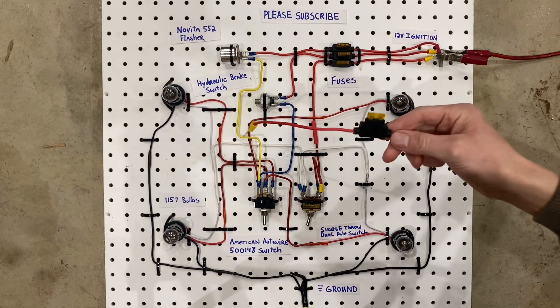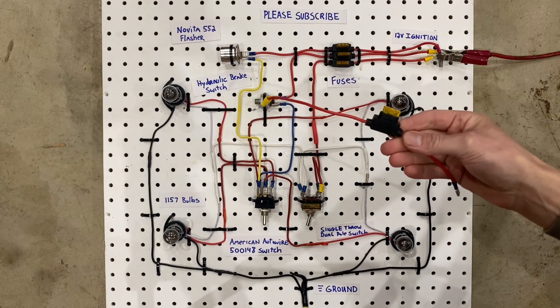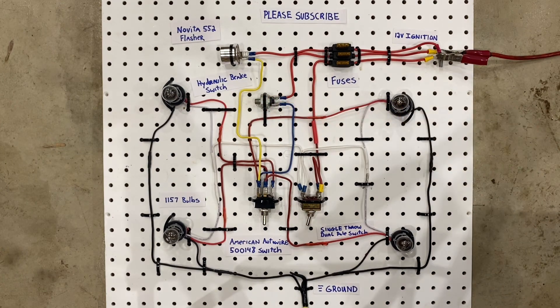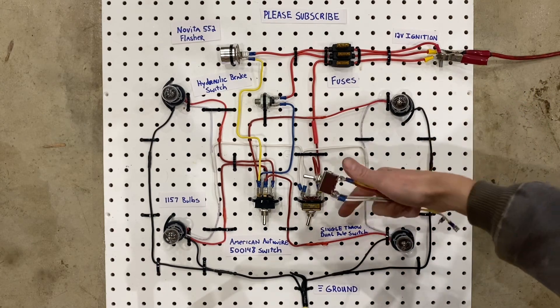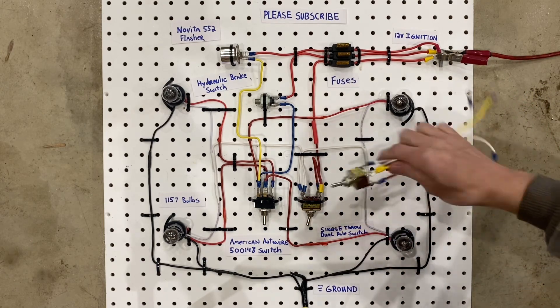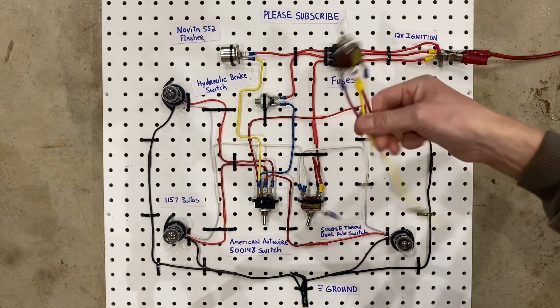You need another fused wire, or a fused box of some sort. And then you need another switch. This switch is the same exact switch that this is. It is a single throw dual pole switch. It's literally the same exact one. And then you need some wires.